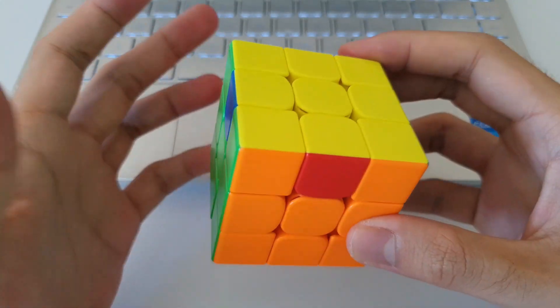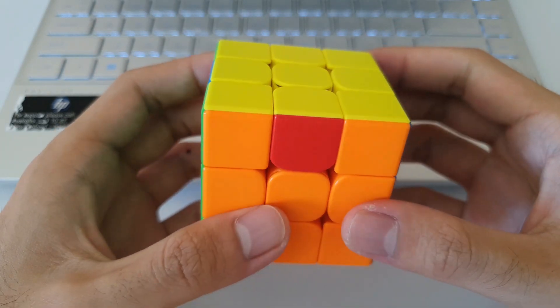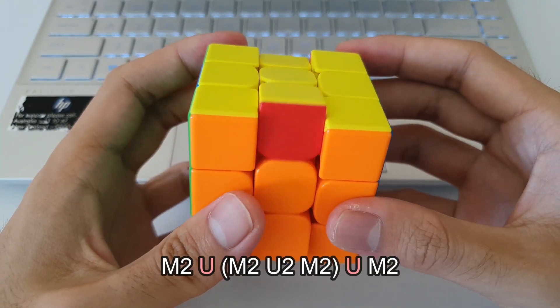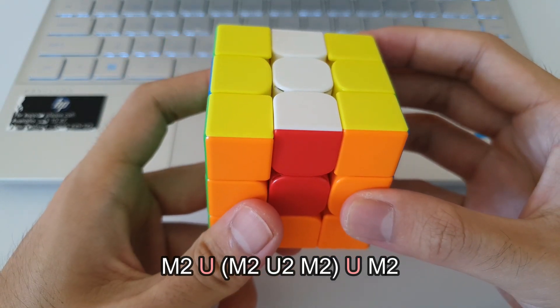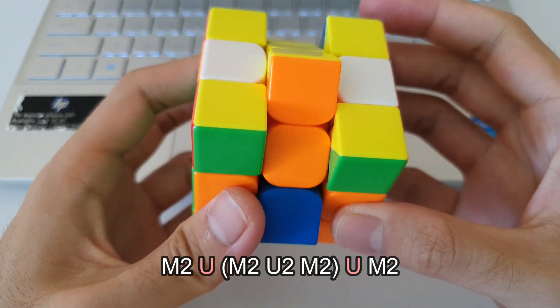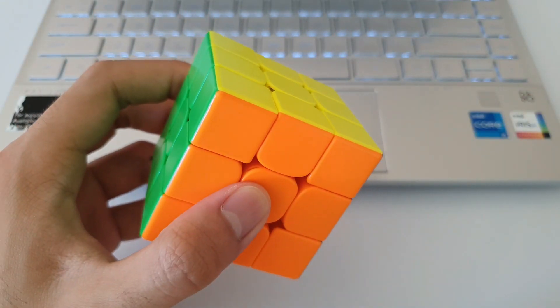And it still solves the H perm case. So just as an example, I'll do the M moves with my left hand and the U moves with my right hand and I'll do U's instead of U prime. So it'll go something like this. So start off with the M2 and do U's instead.